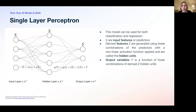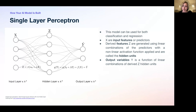The derived features Z are generated using linear combinations of the predictors, and they're called hidden units because they're not directly observed. The output variable Y is modeled as a function of linear combinations of the derived hidden units Z. This network is also called a fully connected network, meaning each neuron or unit is connected with each unit in the following layer. It's also called a feed-forward network because data flows in one direction — from input to output — without any feedback loops or recurrent connections. The connecting lines indicate the mathematical operations applied on inputs to produce outputs.